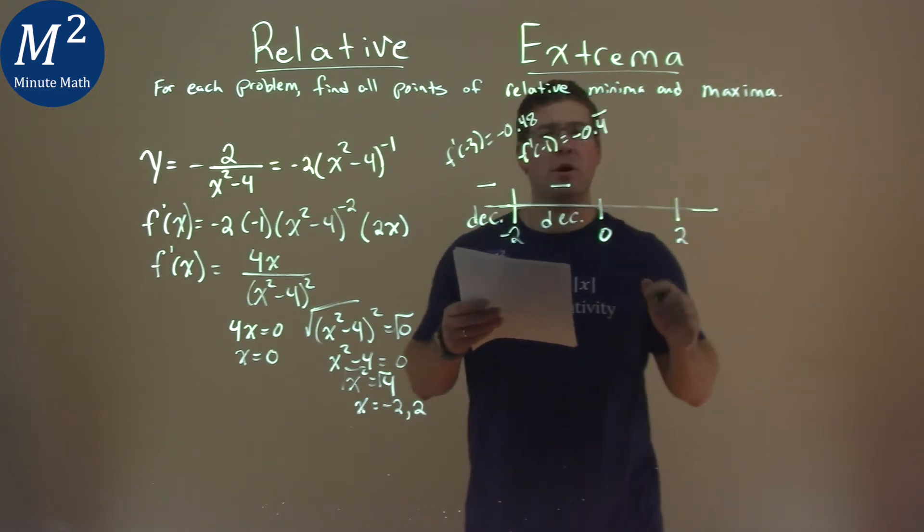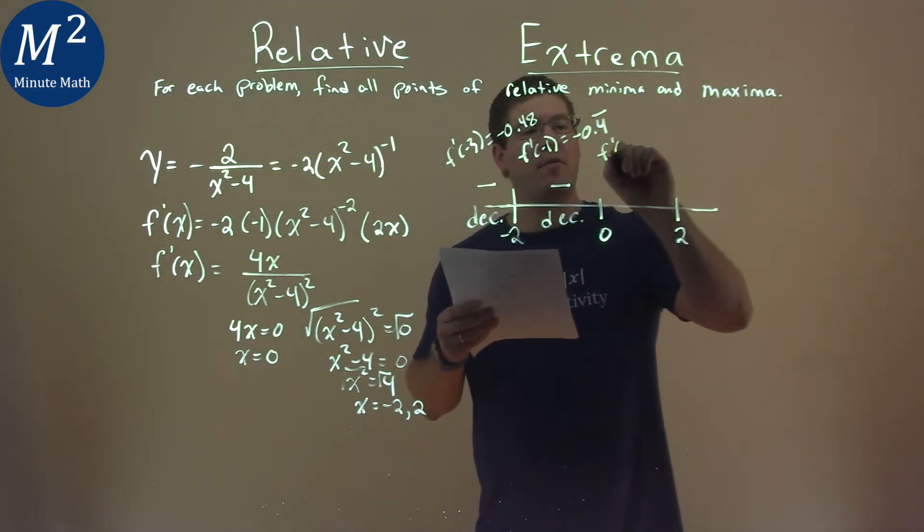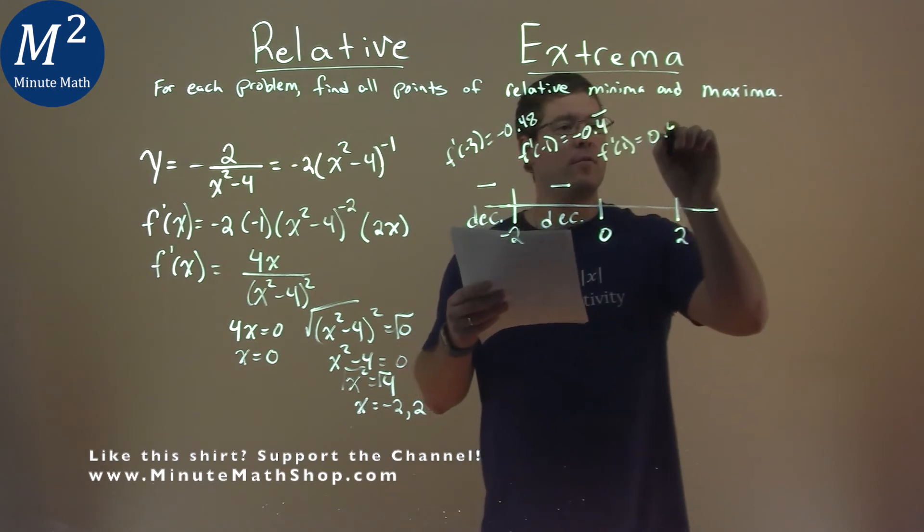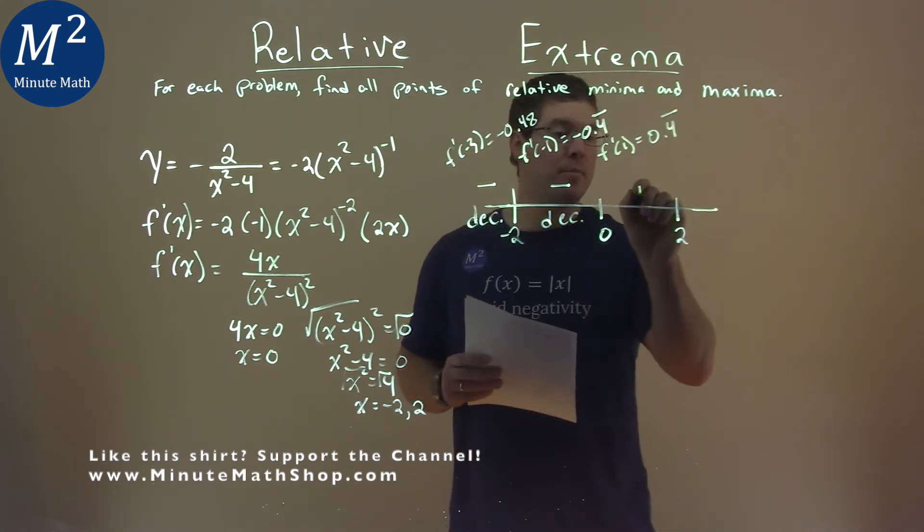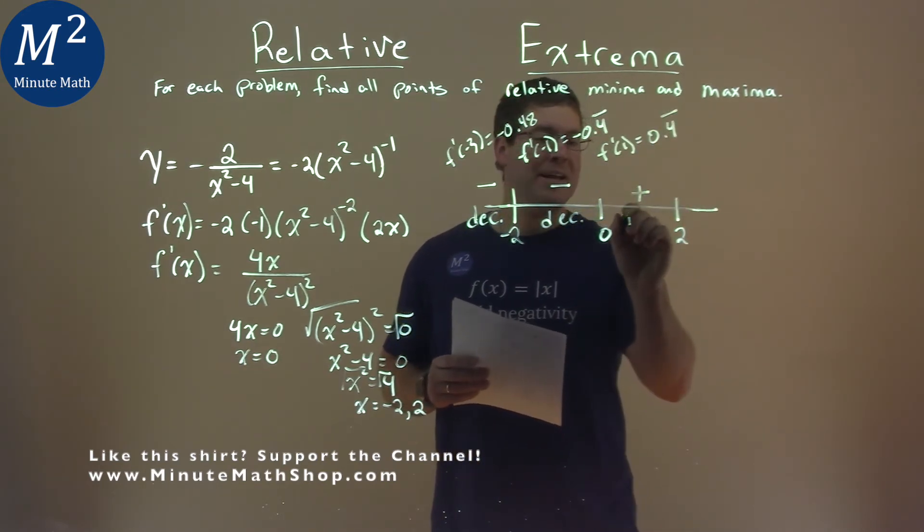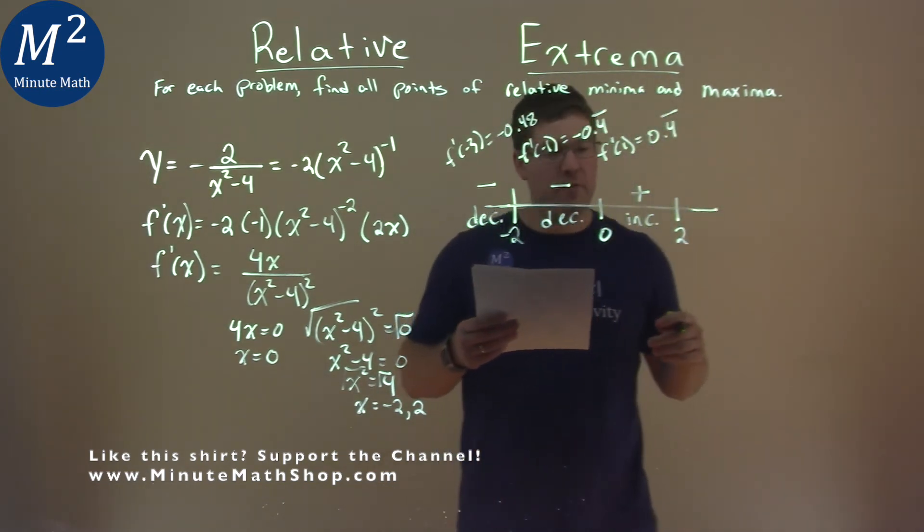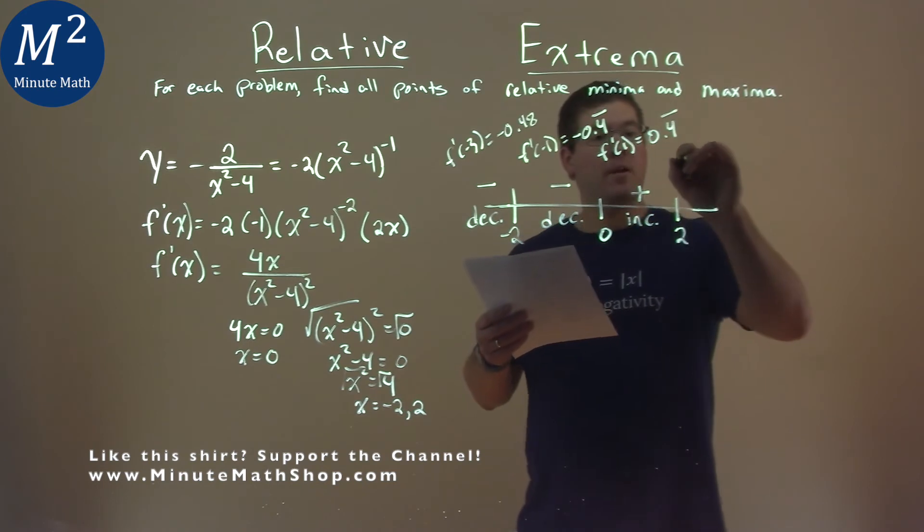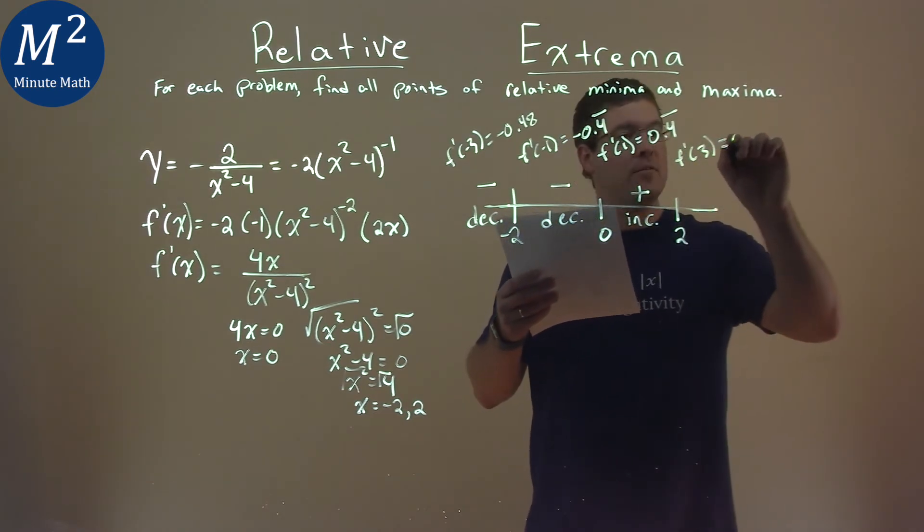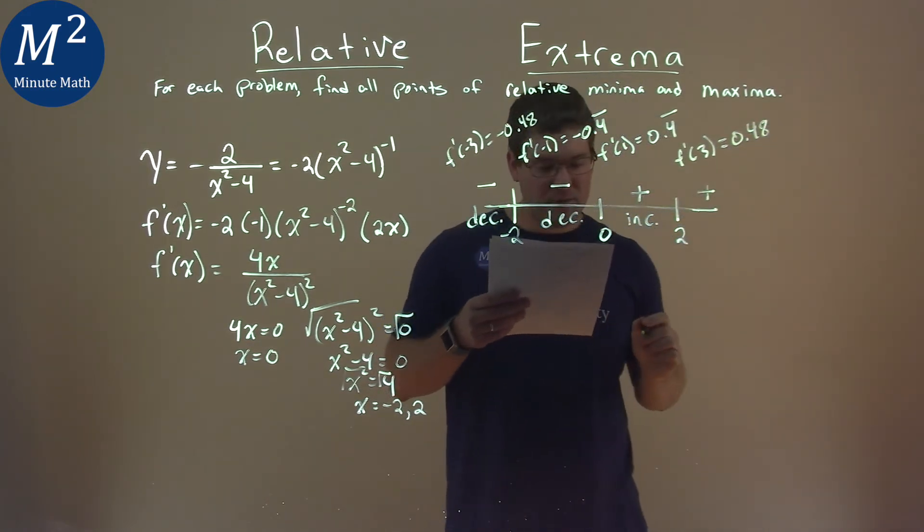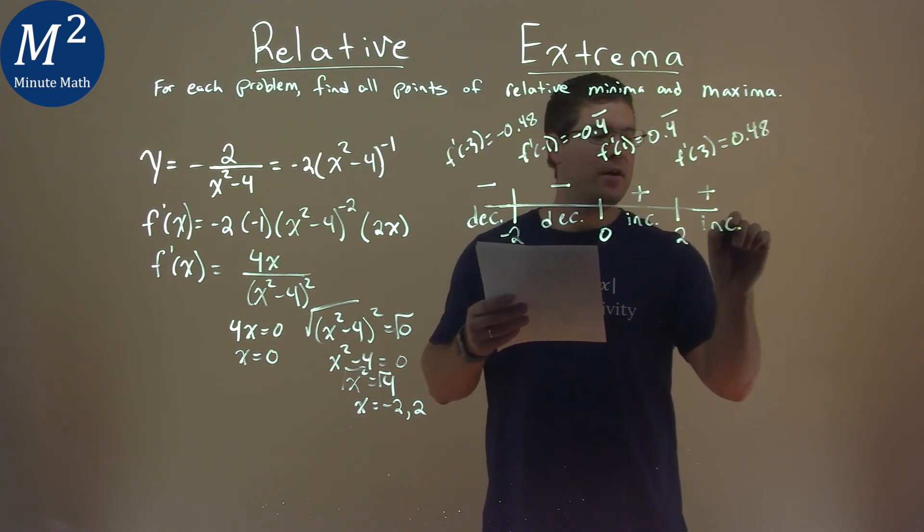Between 0 and 2, I picked 1, so f prime of 1, and that came out to be positive 0.48. It's positive, that's what I care about, and so we're increasing here.